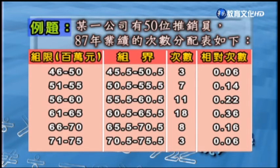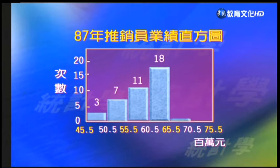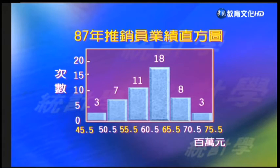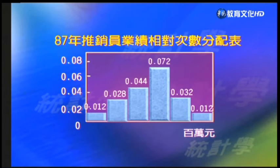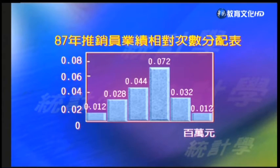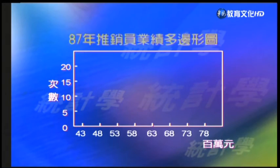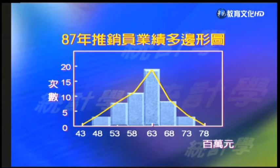下一個例子談某一個公司有50位推銷員他們業績的次數分配表。有了這樣一個次數分配表，計算出次數也可以得到相對次數，再將這些次數分配表畫成圖，可以用直方圖來呈現。從這個87年推銷員業績的直方圖可以看得出來，其中有18個人落在的那一組算是最多人達到業績的那一組。另外，直方圖的高度也可以代表相對頻率，也是一種相對次數。把直方圖各個長方形頂端連接起來，可以看出分布的走勢。